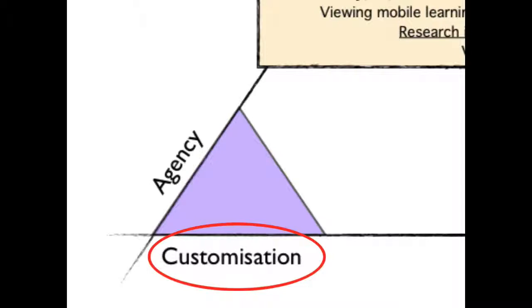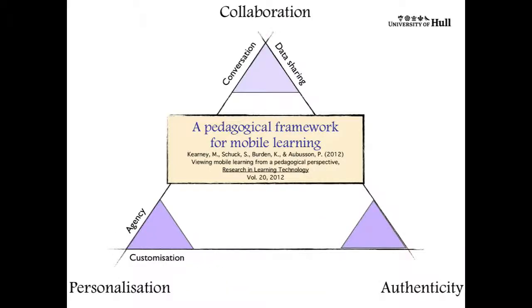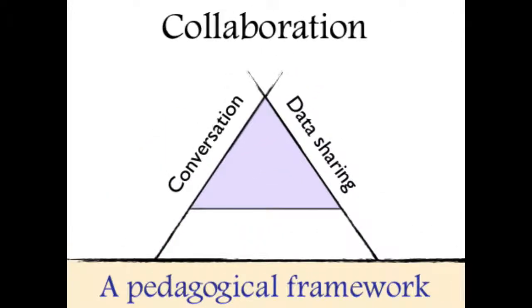The second major concept in the framework is defined as collaboration, and this was identified as an important affordance of mobile devices, since it enables learners to work more closely together, sharing and testing their ideas with others, who may be co-located with them in the same space or room, or they may be virtually collaborating with others in an online space. In this sense, collaboration is seen to consist of two sub-elements, conversation and data sharing.